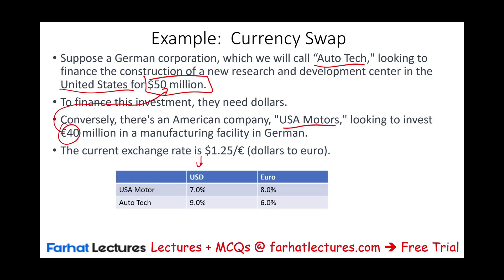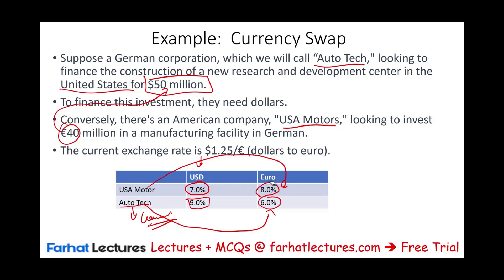They will find a bank that agrees to do this currency swap. If the US company wants to borrow US dollars, they are charged 7%. If the German company wants to borrow US dollars on their own, they're charged 9% because they're not known in the US. On the other hand, if the US company wants to borrow euros, the European bank charges them 8%. If the German company wants to borrow euros in Germany, they're charged 6%. So the best thing is for the US company to borrow in the US at 7%, the German company to borrow euros at 6%, and exchange the loans.